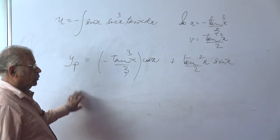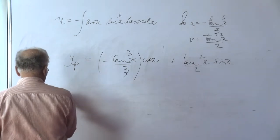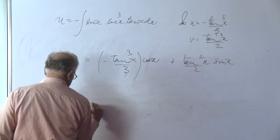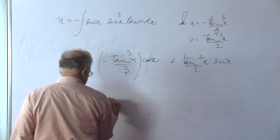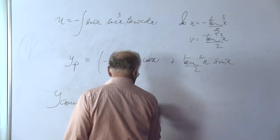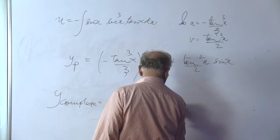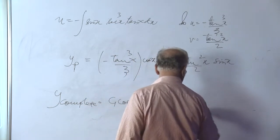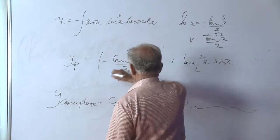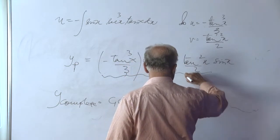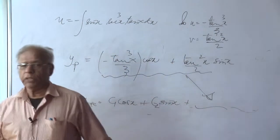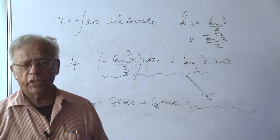The complete solution will be y complete c1 cos x plus c2 sin x plus this particular value of the particular integral. So, that is the complete solution for this equation that we have just done.